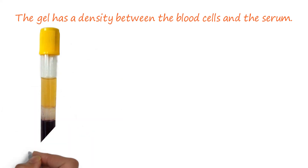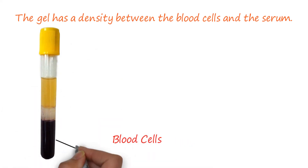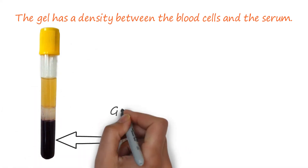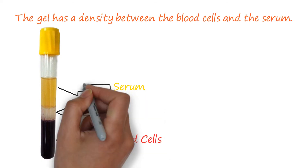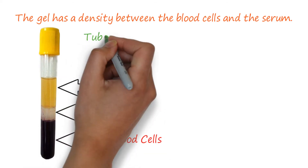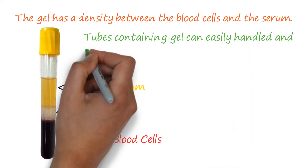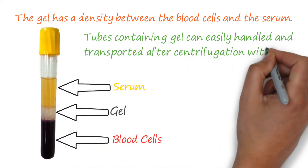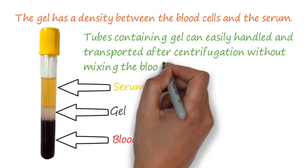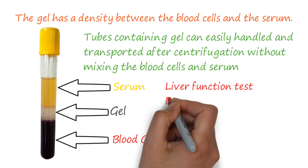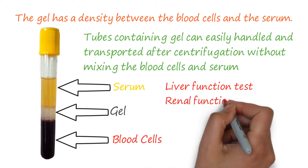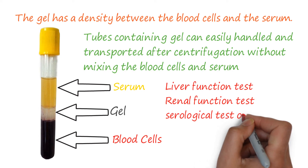During centrifugation, the blood cells settle at the bottom of the tube, the gel covers the blood cells, and the serum is left on top. Tubes containing gel can easily be handled and transported after centrifugation without mixing the blood cells and serum.